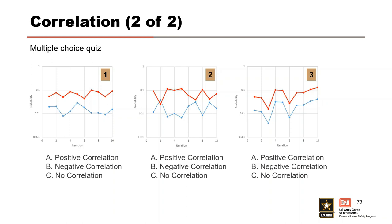Correlation can be quantitatively accounted for in risk analysis using correlation matrices, or more qualitatively by applying expert judgment to estimated probabilities for groups of similar components. In a quick quiz: the first plot shows no correlation since red and blue sometimes move together and sometimes apart; the second plot shows negative correlation as red increases while blue decreases and vice versa; the last plot shows positive correlation as both increase and decrease at the same time.